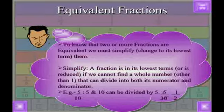that can divide into both its numerator and denominator. Example: 5/10. Five and ten can be divided by five. So five ones are five and five twos are ten. So the lowest term of 5/10 is 1/2.